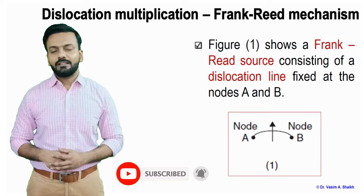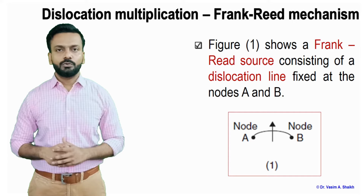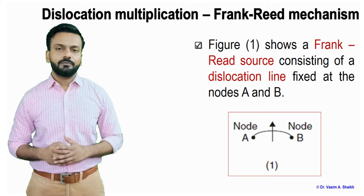In dislocation multiplication by Frank-Reed mechanism, let us consider a scenario here. As shown in this figure, points A and B are two nodes, and in between there is a dislocation which is held by these two nodes. Figure 1 basically shows a Frank-Reed source consisting of a dislocation line which is fixed at nodes A and B.